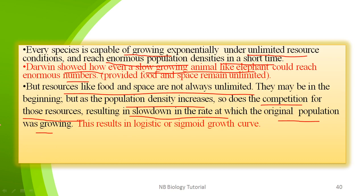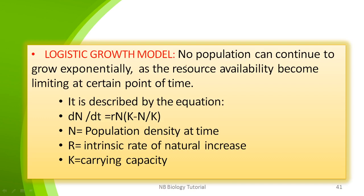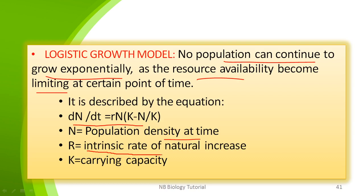The second model is the logistic growth model. No population can continue to grow exponentially as resource availability becomes limited. In the exponential model there are unlimited resources, but in the logistic growth model resource availability is limited. It is described by the equation: dn/dt = rN × (K - N) / K, where N is the population density at time t, r is the intrinsic rate of natural increase, and K is the carrying capacity.